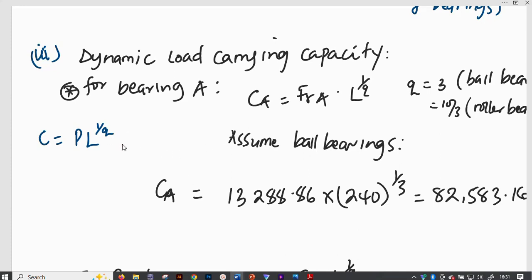Then Q is a constant that depends on whether the bearing is having, is a ball bearing or is a roller bearing. For this case, the roller bearing takes Q equal to 10 out of 3 and the ball bearing is Q equal to 3. In this case, we are assuming a bearing that has balls and therefore it is going to be a ball bearing.